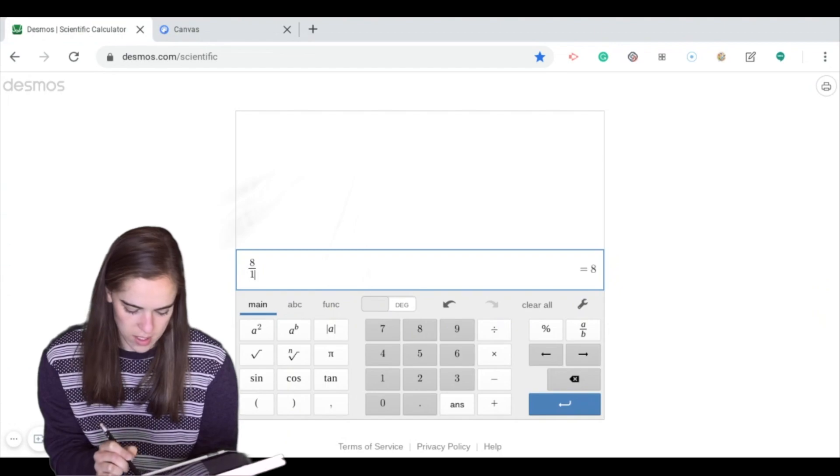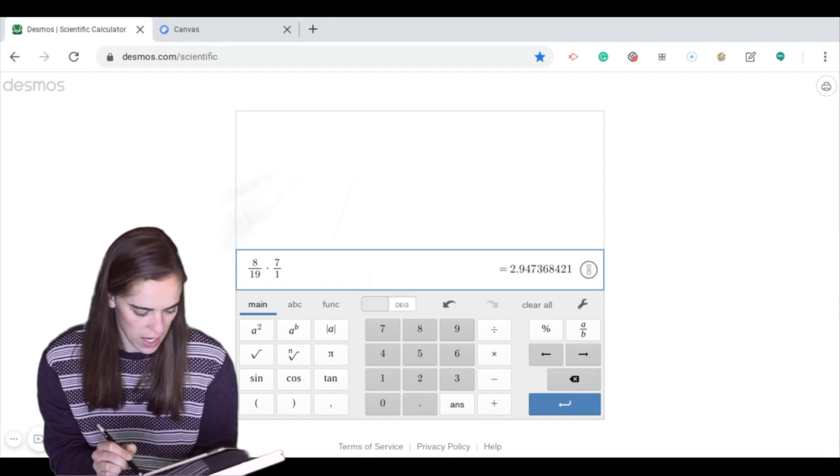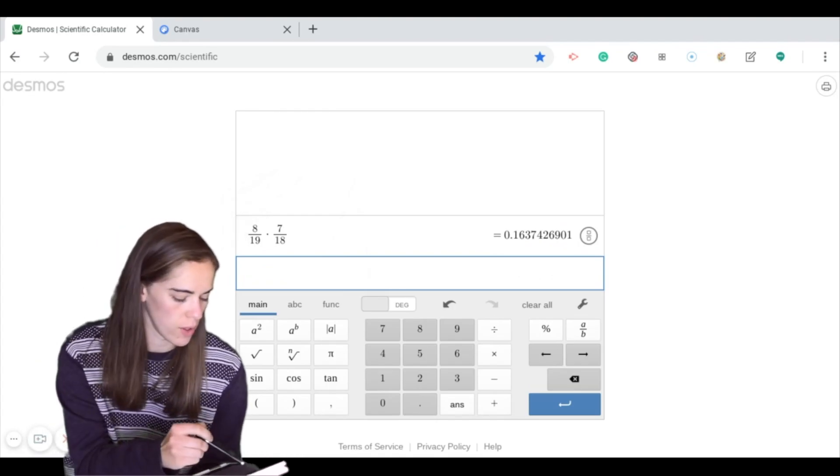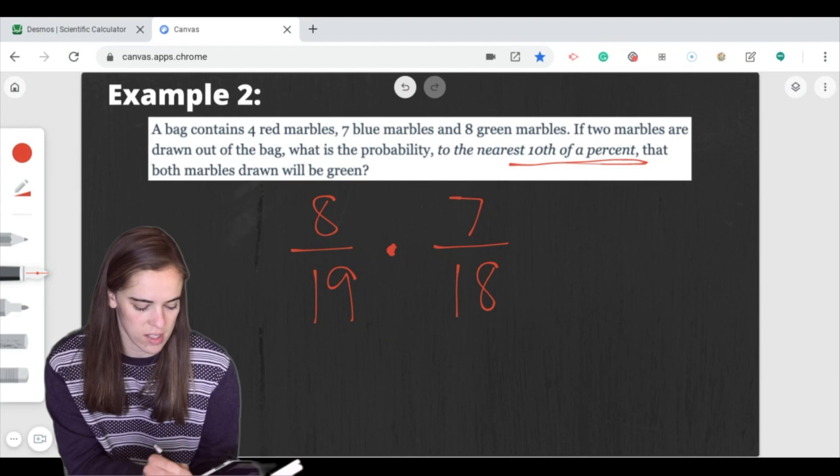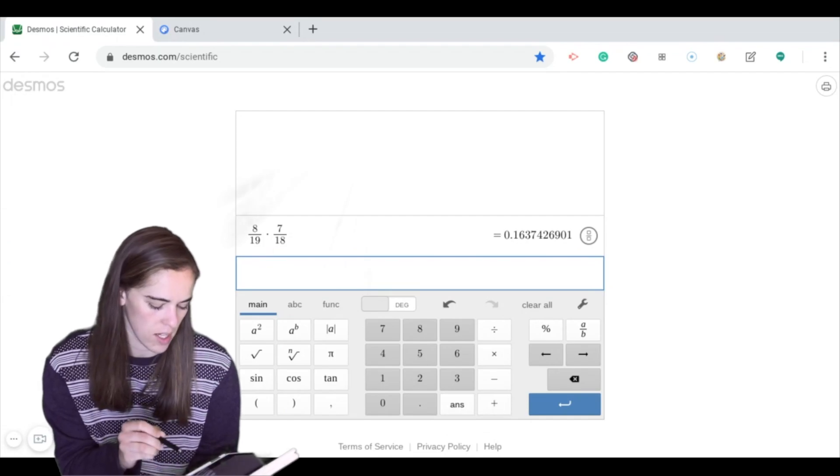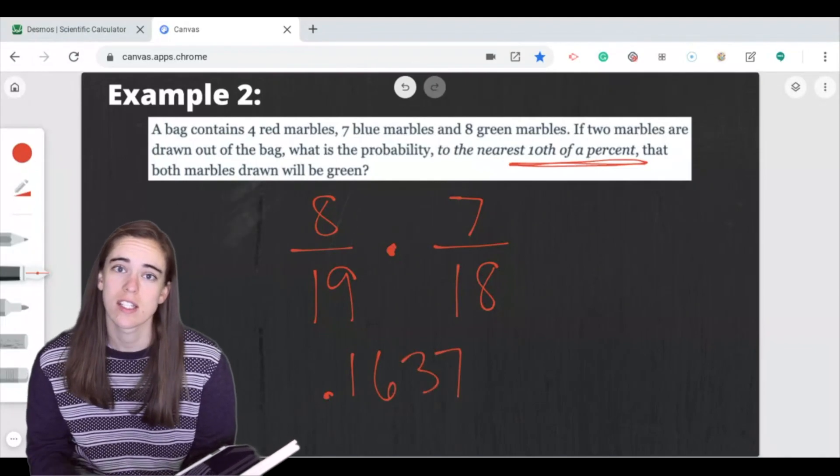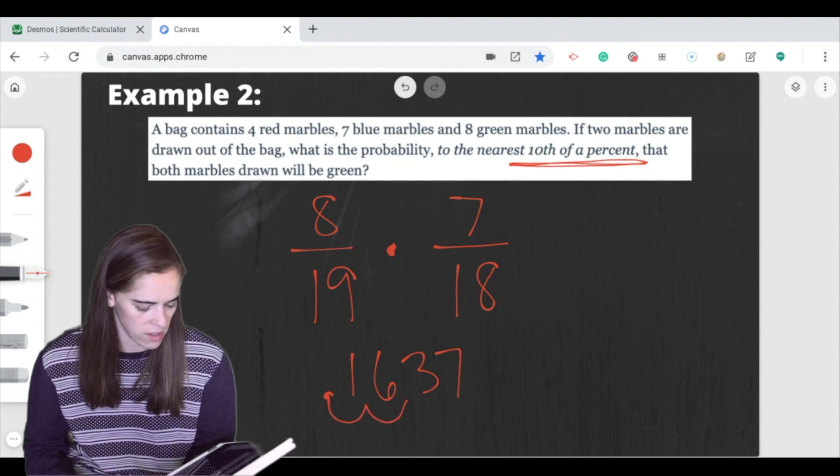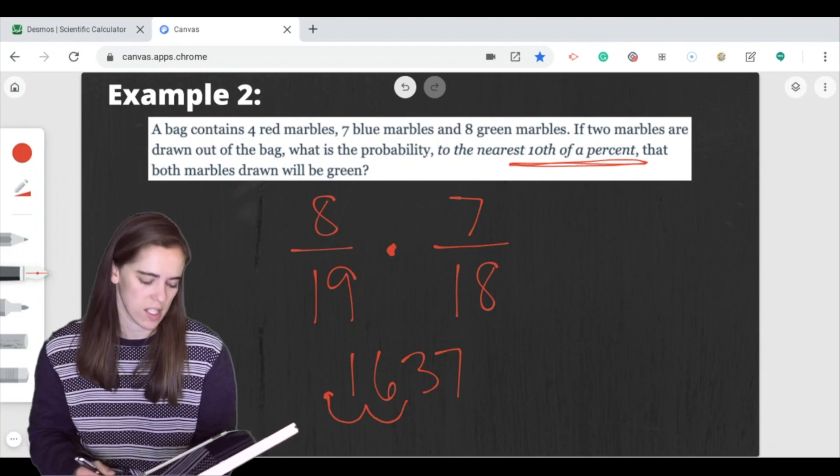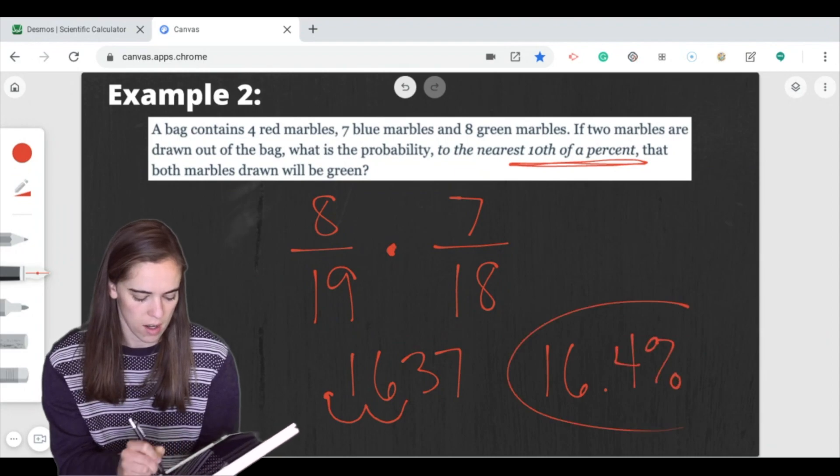All right, so we have 8 19ths, and then we're going to multiply that by 7 18ths. So here we get 0.1637. And if we look back at that problem, it says we need it to the nearest 10th of a percent. So to start off, let's copy that over. So 0.1637. Right now it's at a decimal. To change it to a percent, I need to move it twice. And so for this one, we would have 16, and then it's the nearest 10th of a percent. So that's one decimal place. That's going to give me 16.4 percent as my final answer.